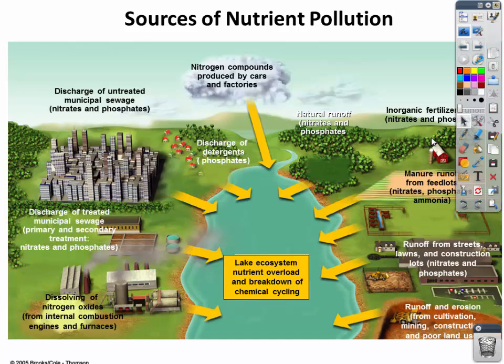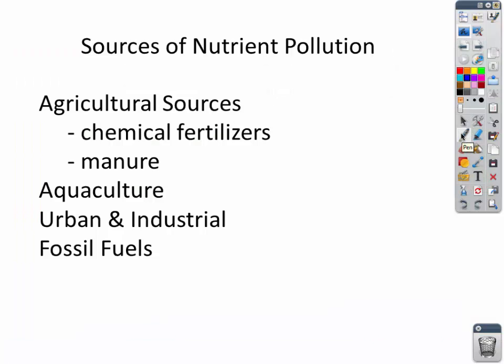Let's take a look at the sources of nutrient pollution. I kept pointing a finger at agriculture, but they're not the only ones contributing to this problem. There are a lot of sources of nutrient pollution. The agricultural sources are chemical fertilizers and manure. We're also seeing an increase in aquaculture, which is fish farming, as well as urban and industrial sources. And our continued reliance on fossil fuels adds nitrous oxides to the atmosphere, which leads to acid rain, which comes back down and pollutes our waterways.